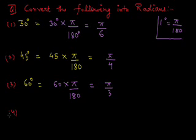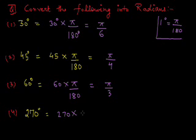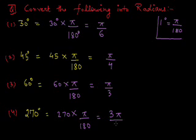Similarly, we can convert 270 degrees into radians. Since 1 degree equals pi by 180 radians, 270 degrees equals 270 into pi by 180. After simplification it becomes 3 pi by 2. So 270 degrees equals 3 pi by 2 radians.